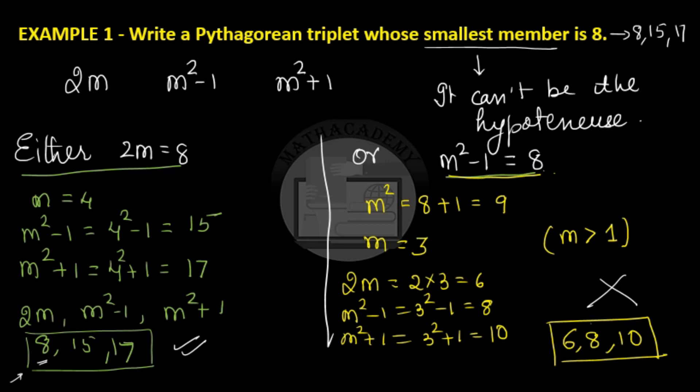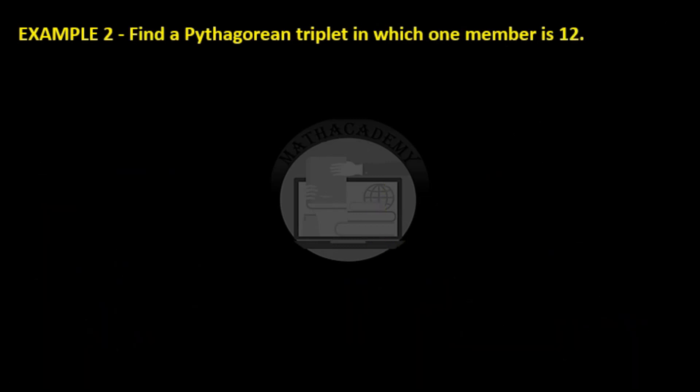Let us see one more example. Find a Pythagorean triplet in which one member is 12. It can be any of the members. It can either be 2m = 12 or m² - 1 = 12 or m² + 1 = 12. These are the 3 members of the Pythagorean triplet and it says that any one member is equal to 12. We need to figure out which member is 12 now. From here we get m as 6.